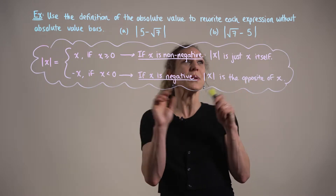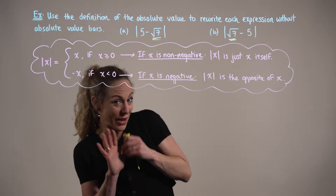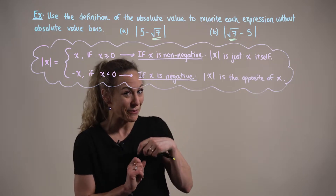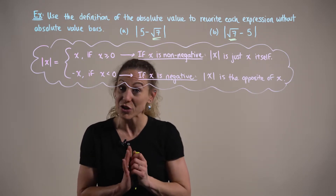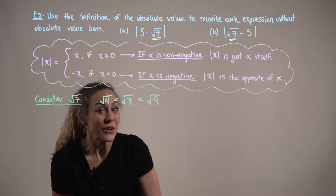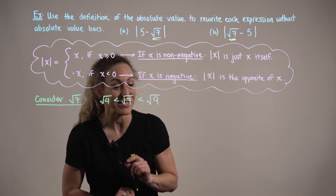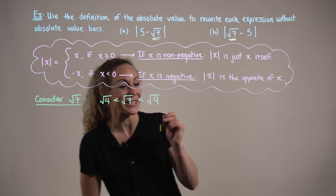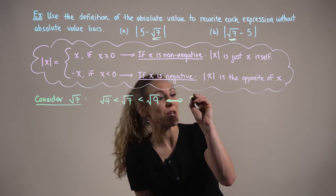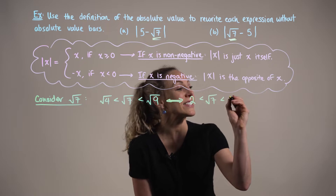Looking at both parts, we can see that we have the square root of 7 in both expressions. Assuming we don't have our calculators, we need an approximate value for this irrational number to determine which case of the absolute value definition to use. We can use the next smallest and next biggest perfect squares around 7: since 4 and 9 are perfect squares, we conclude that the square root of 7 is greater than 2 and less than 3.